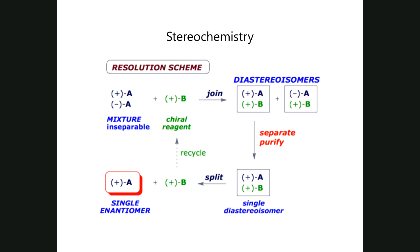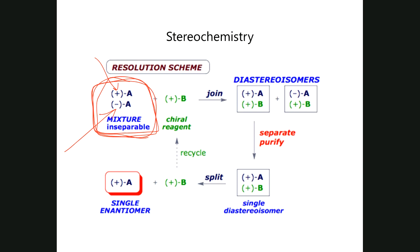Imagine you've created a drug mixture — an inseparable mixture of enantiomers whose properties are so close it's impossible to separate them on their own. Let's say the dextrorotatory drug is the one that will cure Alzheimer's disease, but the levorotatory version causes cancer. You can't give patients the one that cures Alzheimer's if the other half causes cancer. So you have to separate them.